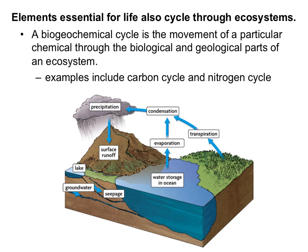Now we'll talk about cycles. Biogeochemical cycles track the movement of a particular chemical through the biological and geological parts of an ecosystem. A great example is the water cycle — we can track water through animals and plants that take water into their systems (the biological part), and through surface runoff, storage in the ocean, underground storage, condensation, and precipitation (the geological parts). The two cycles we're going to learn about for this unit are the carbon cycle and the nitrogen cycle.